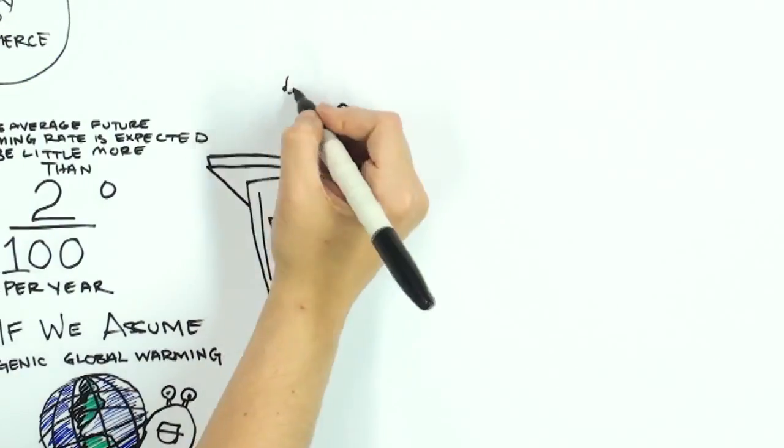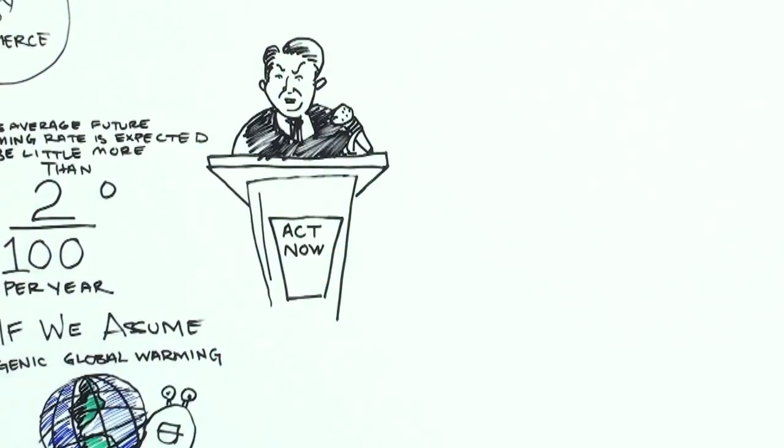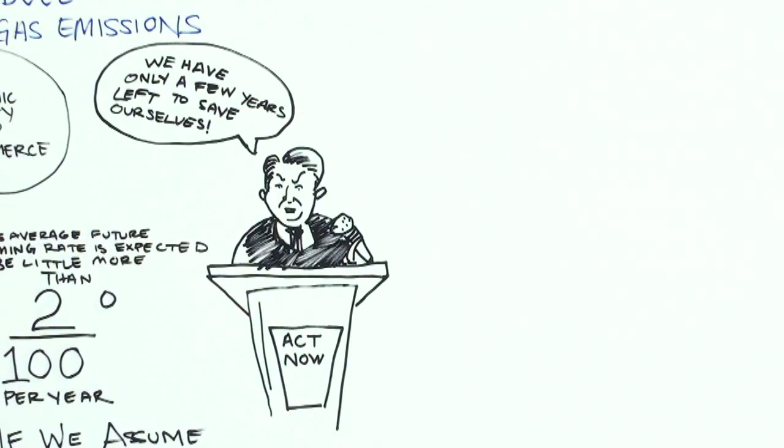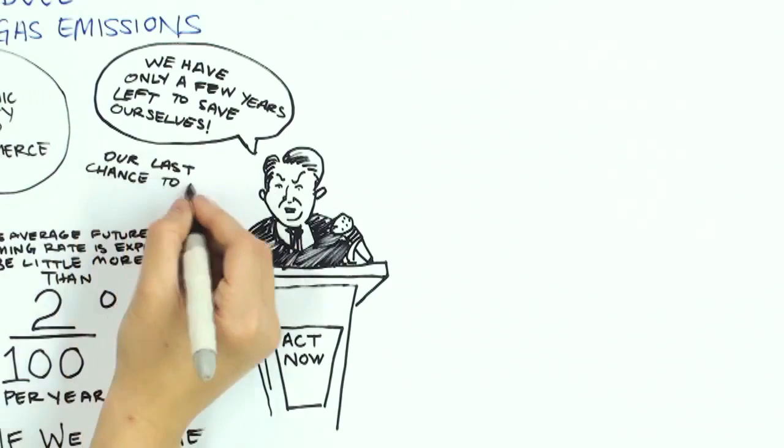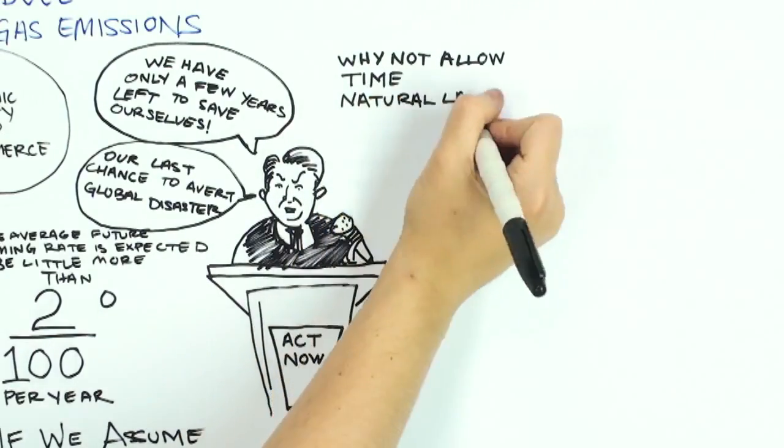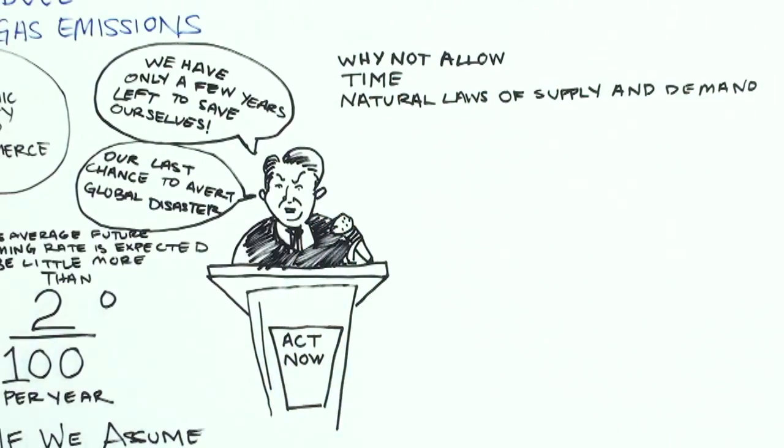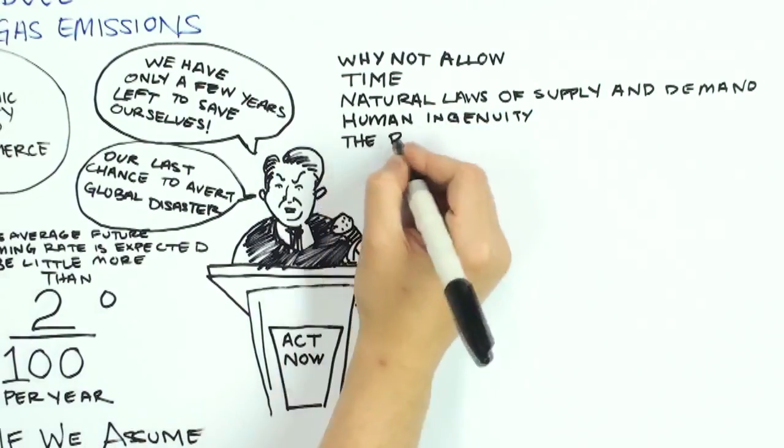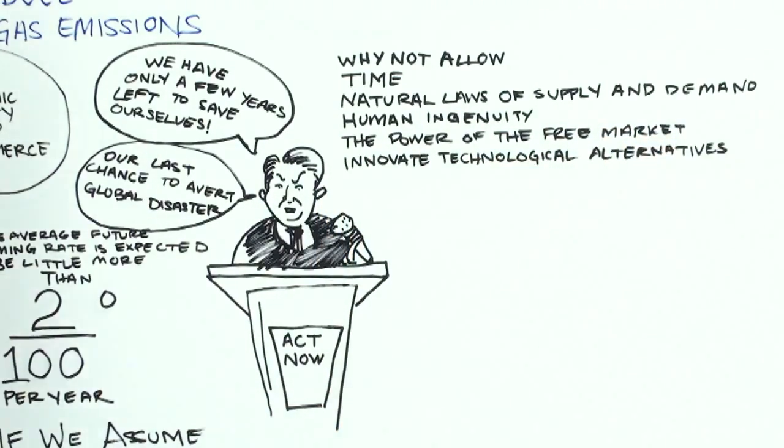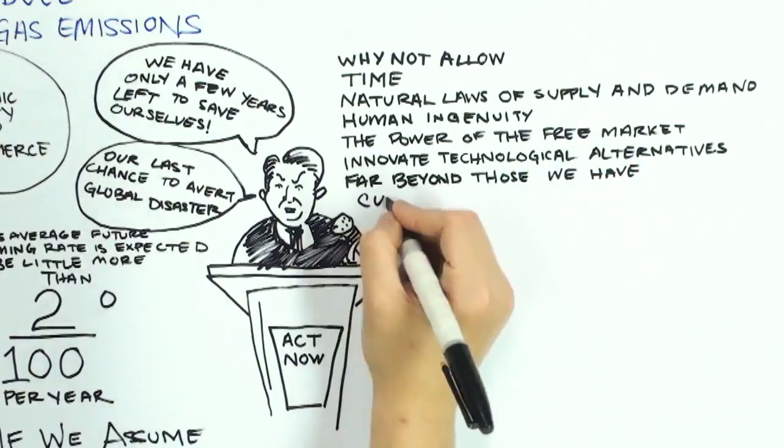So why is it that there is such a strong push to act now? Why do politicians keep claiming we have only a few years left to save ourselves, or that the latest UN meeting is, once again, our last chance to avert global disaster? Instead, why not simply allow time and the efficient forces of supply and demand, human ingenuity, and the power of the free market to innovate technological alternatives far beyond those we have currently created?